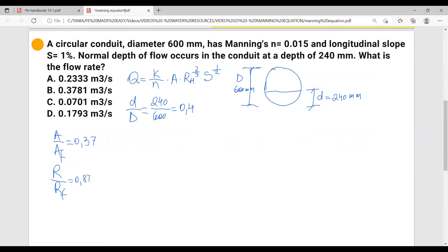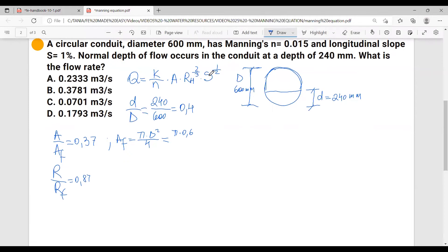What we know is that area of flow equals to the area of this circular pipe, and this would be pi times d squared over 4. And this equals to pi times 0.6. I am transforming 600 millimeters into meters, and the reason is because when applying the Manning's equation, the area is required in meters.